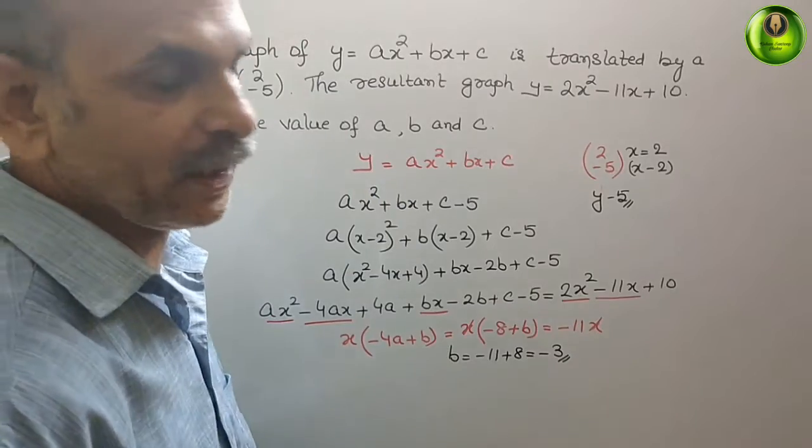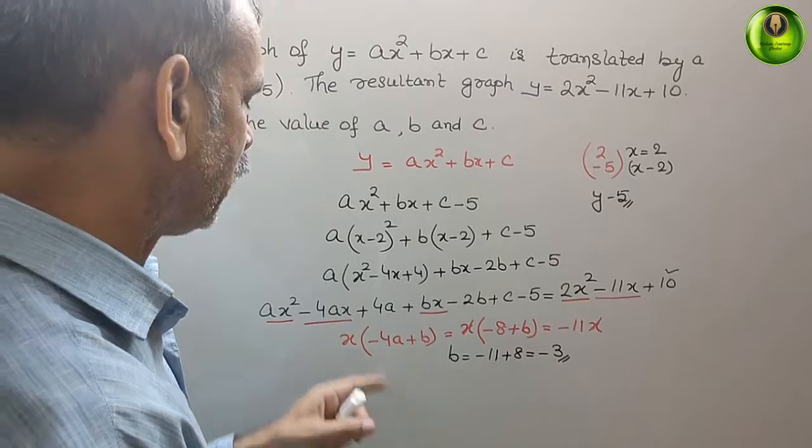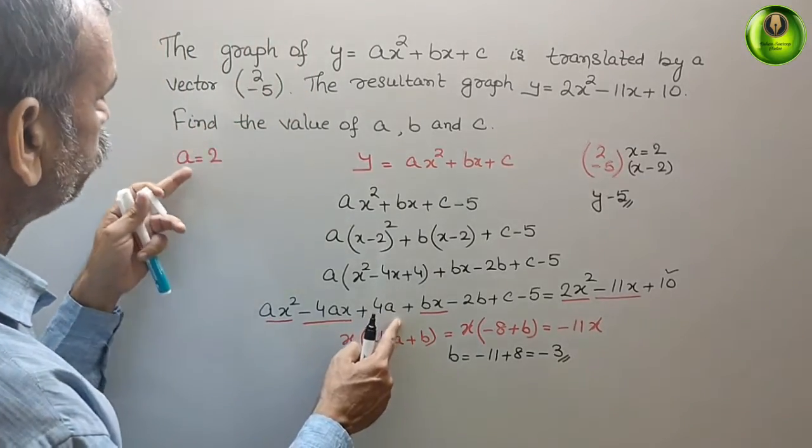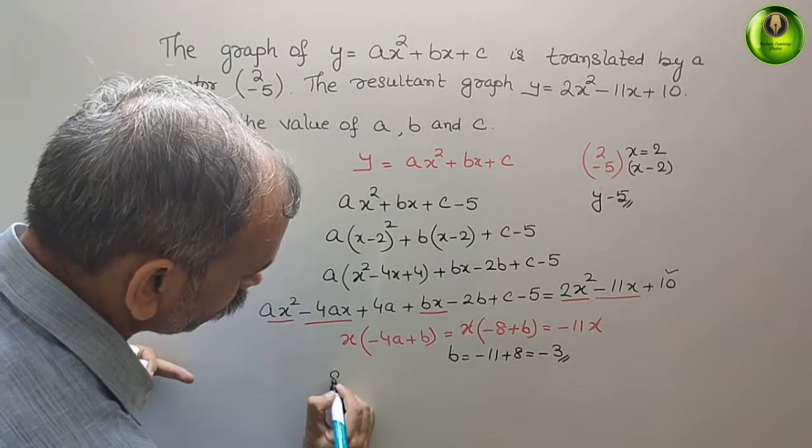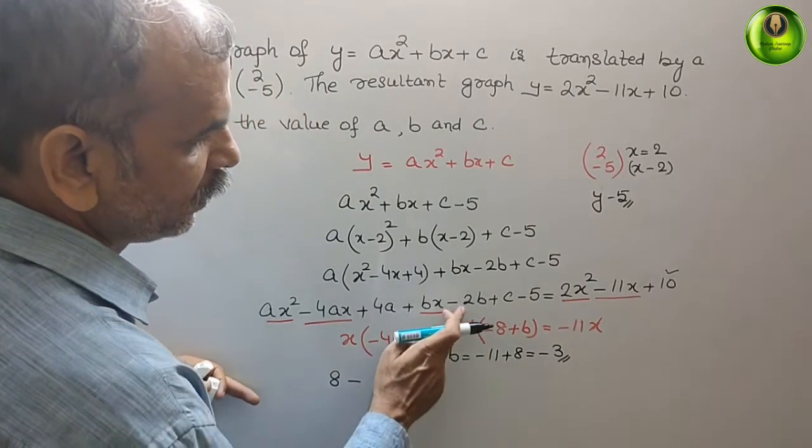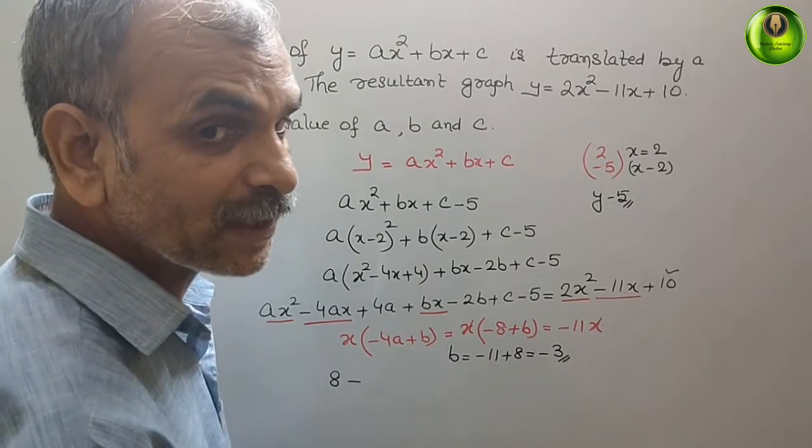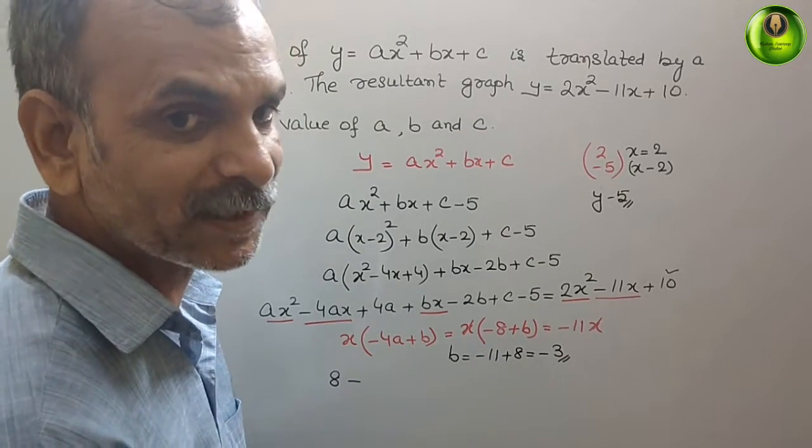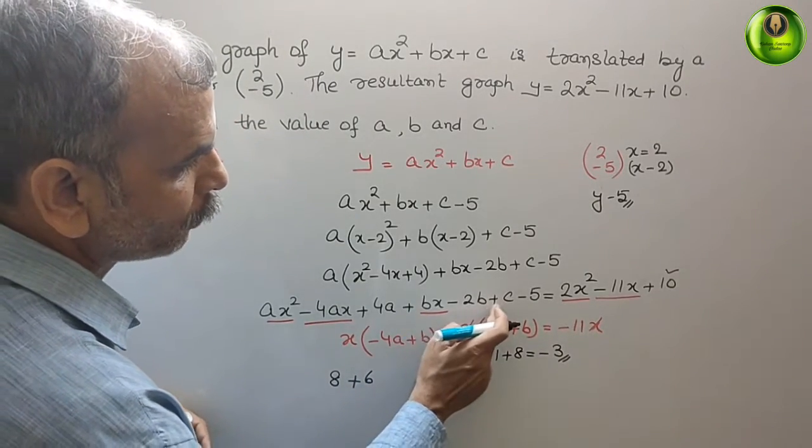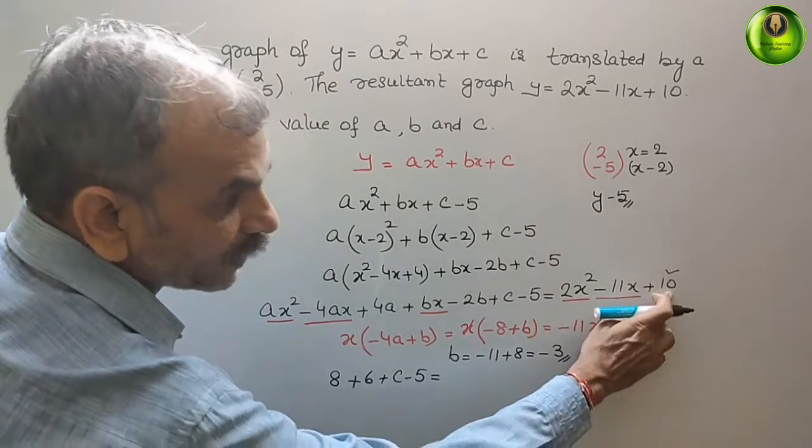Now comes to your constant, that is your 10. See that, what is left? 4a, that means 4 into 2 is 8. Next is minus 2b. 2 and b is minus 3. Minus 2 into minus 3 is plus 6. So here comes 8 plus 6 plus c minus 5, that equals 10.